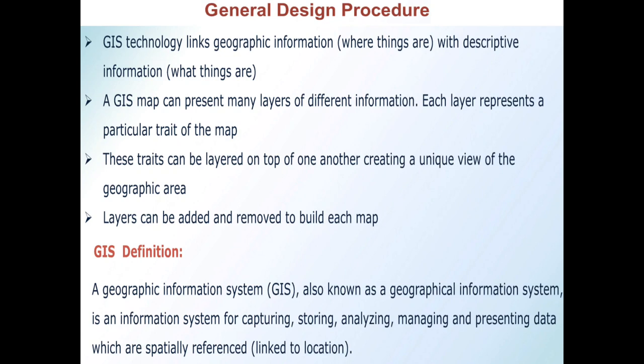A GIS map can present many layers of different information, and each layer represents a particular trait of the map. These traits can be laid on top of one another, creating a unique view of a geographic area, and layers can be added and removed to build each map.